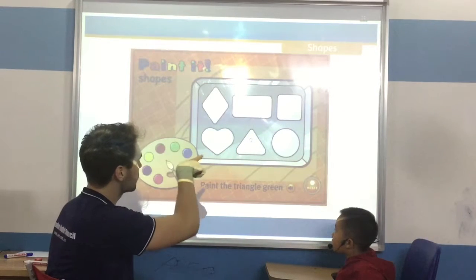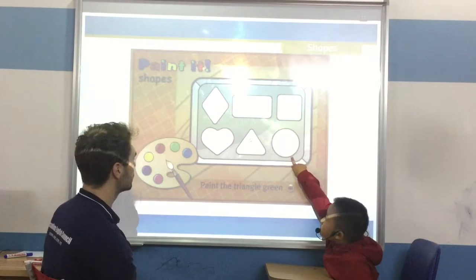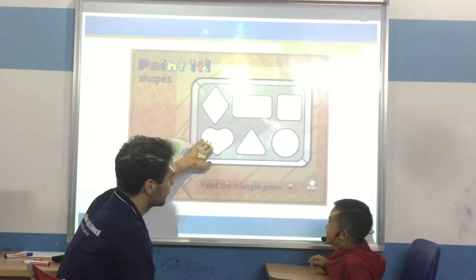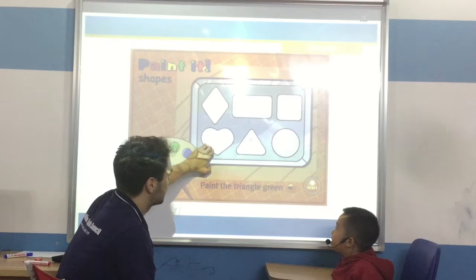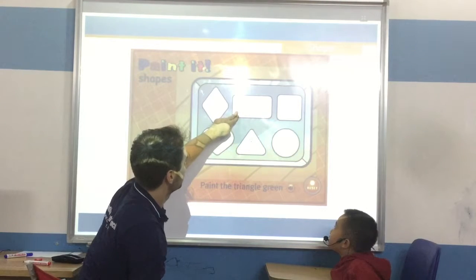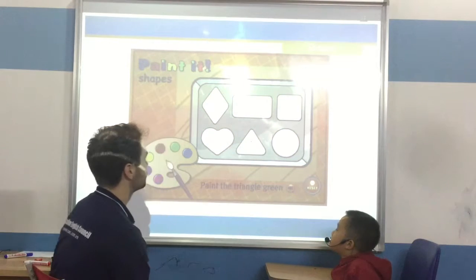Can you point to a circle? Where's the circle? Well done. What shape is this? Heart. It's a heart. Good. What's this? It's a triangle. Good. Well done.